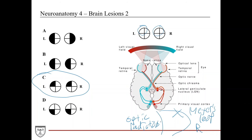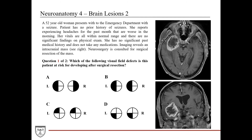For completeness: the optic radiations on the right side carry inputs from the left inferior quadrants of both eyes. If the parietal lobe were affected, disrupting the optic radiations, you would get a left inferior quadrantanopia — answer D. But since the tumor is in the temporal lobe, answer C — left superior quadrantanopia from Meyer's loop involvement — is the most likely answer. Surgery on this large temporal lobe mass could definitely impact Meyer's loop.